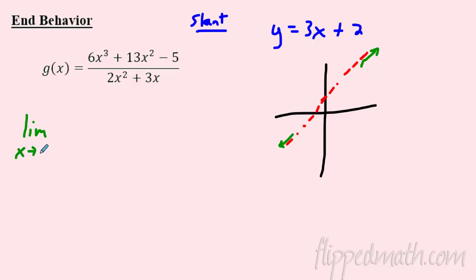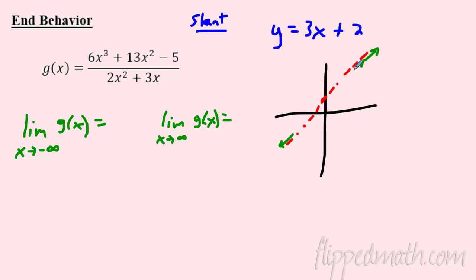So for end behavior: the limit as x → -∞ of g(x) goes to -∞, and the limit as x → +∞ of g(x) goes to +∞, since the slant asymptote has positive slope. You could also verify this algebraically using limit methods. But knowing the slant asymptote can speed things up. Practice especially the long division — it gets tricky. Good luck on the mastery check!